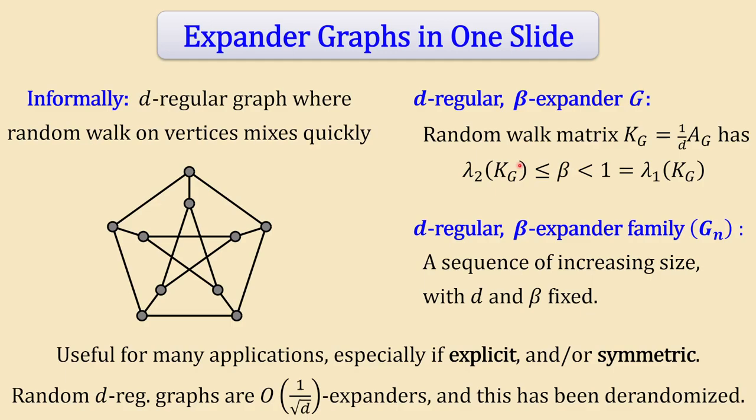Generally we don't just want a single d-regular graph with small second eigenvalue. We want a d-regular beta-expander family: a sequence of ever larger finite graphs G_n where the regularity parameter D is fixed and the second largest eigenvalue bound beta is also fixed. Expander graph families have many uses in theoretical computer science, especially if they're explicit or have extra symmetry. If you're not worried about explicitness, they're easy to get — a random d-regular graph on n vertices will be an excellent expander with beta roughly 1/sqrt(D).